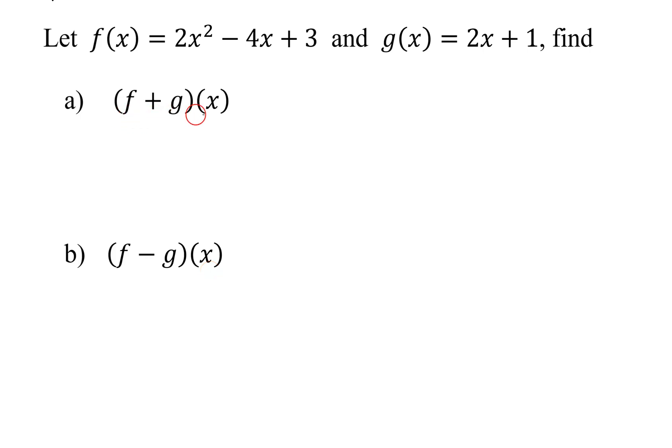So f plus g of x is the sum function, and by definition, it equals f of x plus g of x. So all I'm going to have to do is add my two functions together. What is f of x? It's here, so it's 2x squared minus 4x plus 3,